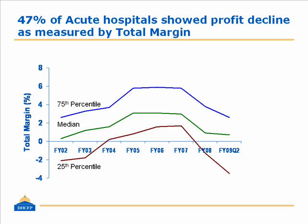But what we've also seen is that the weakest hospitals — those in the 25th percentile — showed the largest decline. So those least able to handle a decline have seen the largest decline, unfortunately, and that's a great concern.